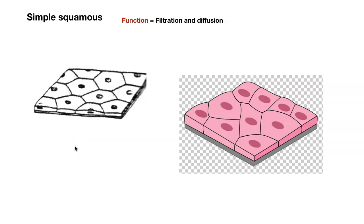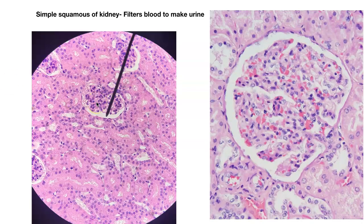So remember: lung — we have areas of gas exchange and that's simple squamous. The function of simple squamous here is diffusion — specifically diffusion of gases. Another function is filtration. Now we're going to be looking at the kidney next, because the kidney also has simple squamous. Hopefully you are following along with your lab manual because I have some of these exact same photos. Make sure you're reading along — there is information in that lab manual that is testable.